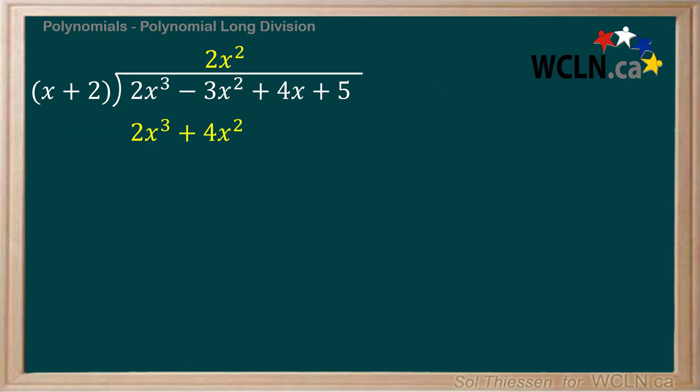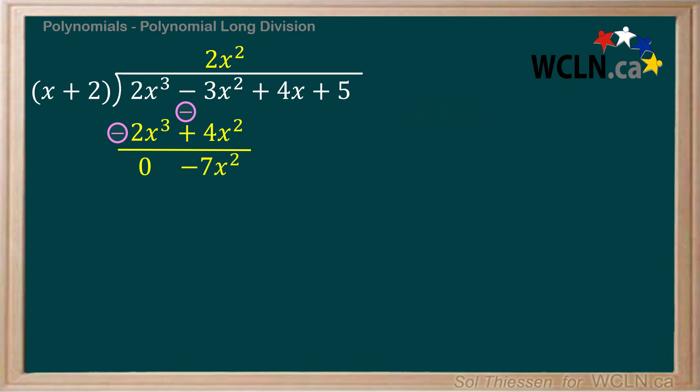Next we subtract the 2x cubed plus 4x squared from the dividend. Keep in mind that both terms are being subtracted. Many students find it useful to distribute the negative from the subtraction among the two terms. A common mistake is to only apply the negative to the first term, so a tip you may find useful is to write the new sign of each term over the old one and circle this new sign. Now the subtraction boils down to the addition of like terms: 2x cubed minus 2x cubed gives us 0, and negative 3x squared minus 4x squared is negative 7x squared. Since the zero is irrelevant, I'll just get rid of it.